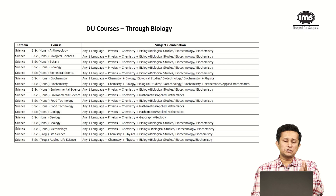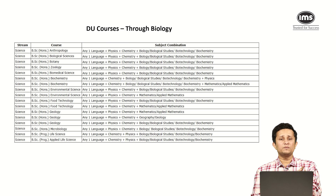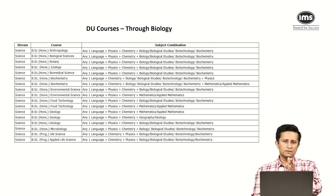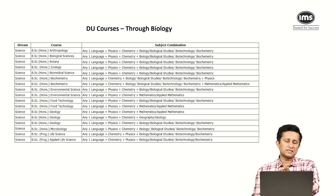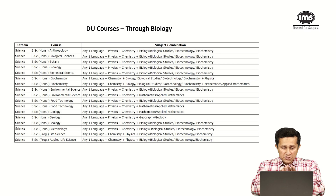Most of these biology-based courses will require a PCB combination. So your ideal subject combination here should be: English, physics, chemistry, and either of these four — bio, biological studies, biochemistry, etc. — plus the general test. This will give you access to all these courses.